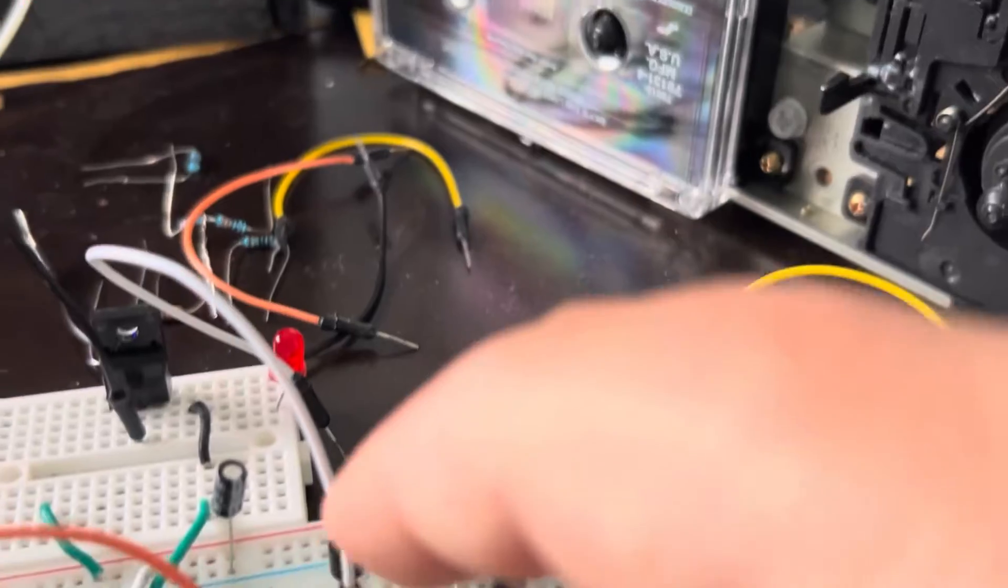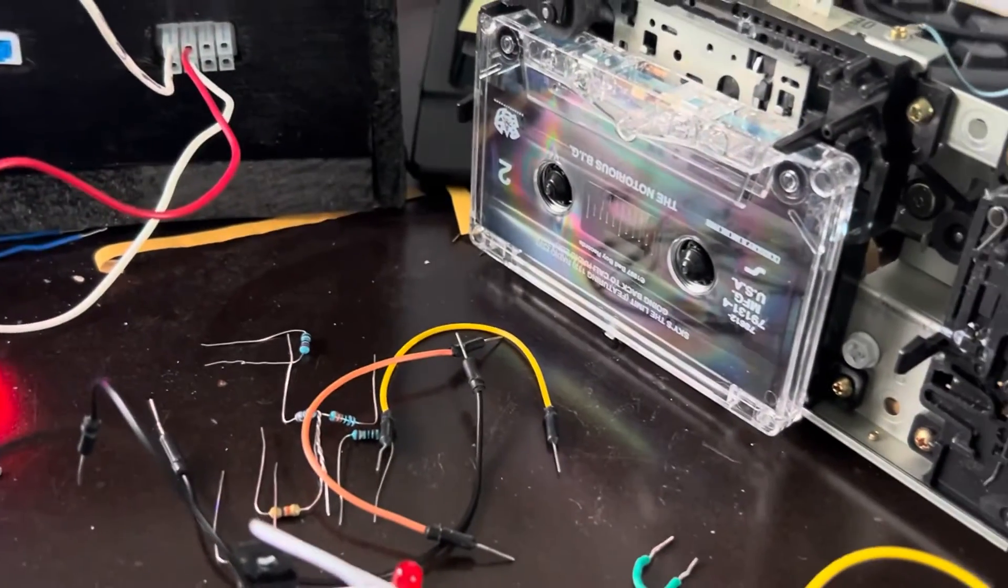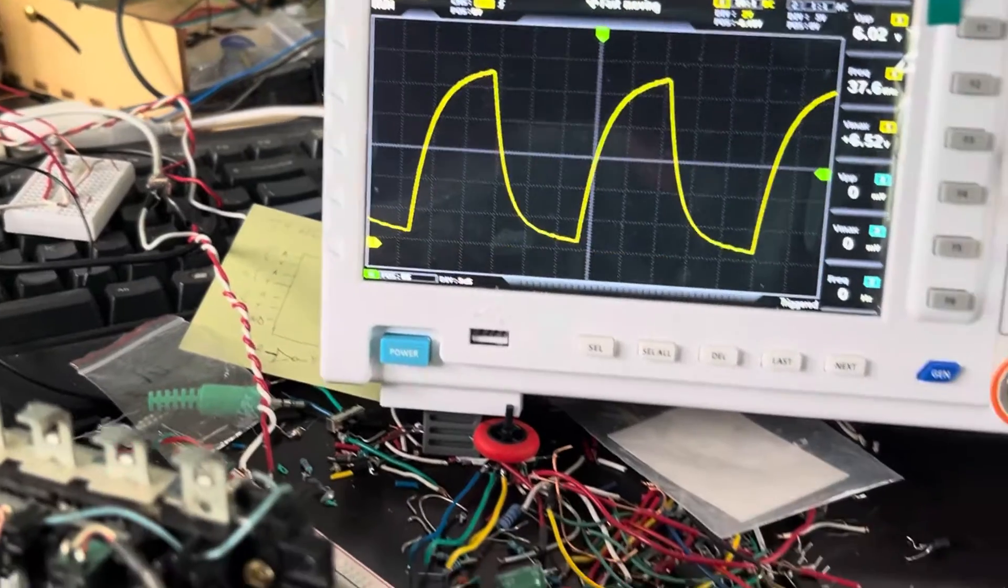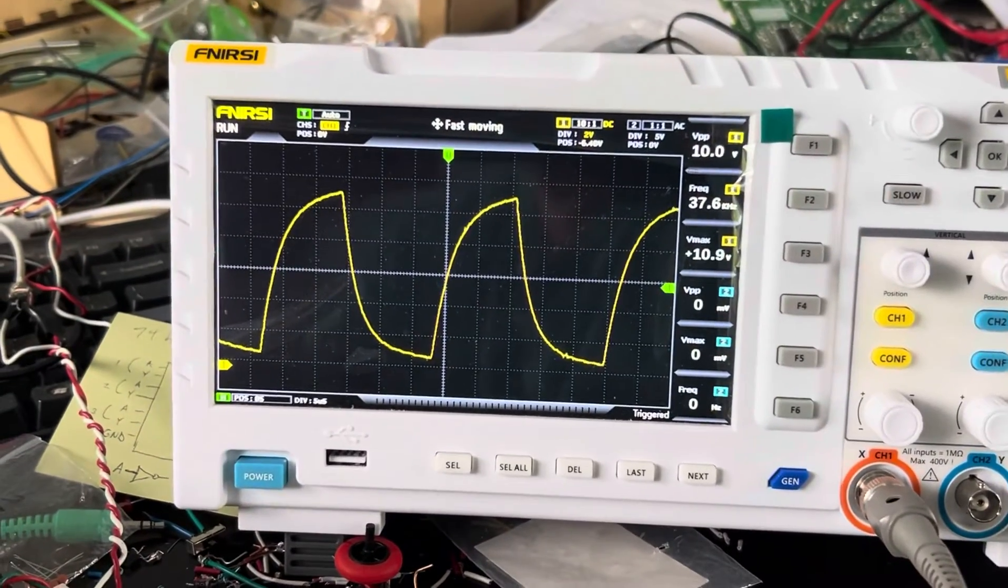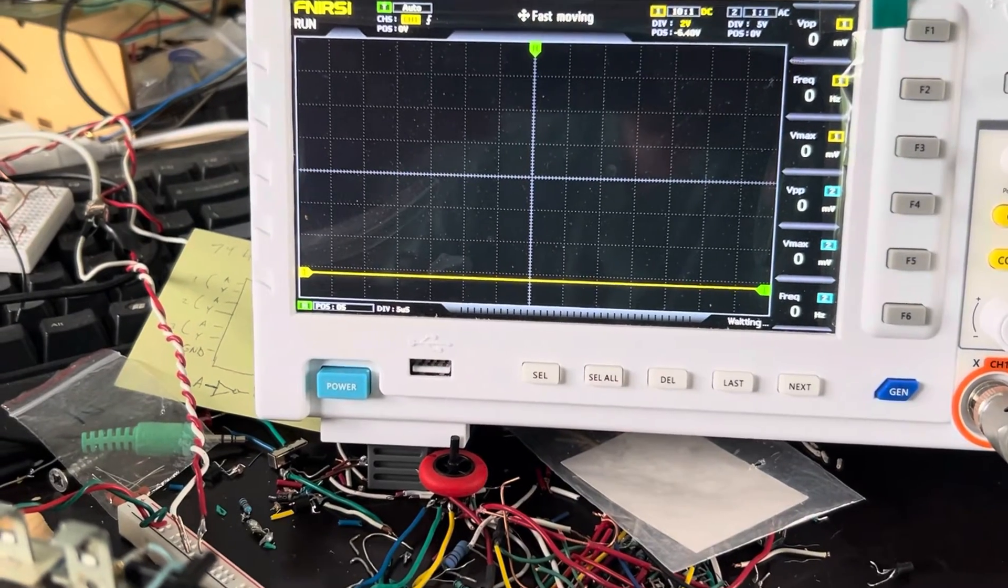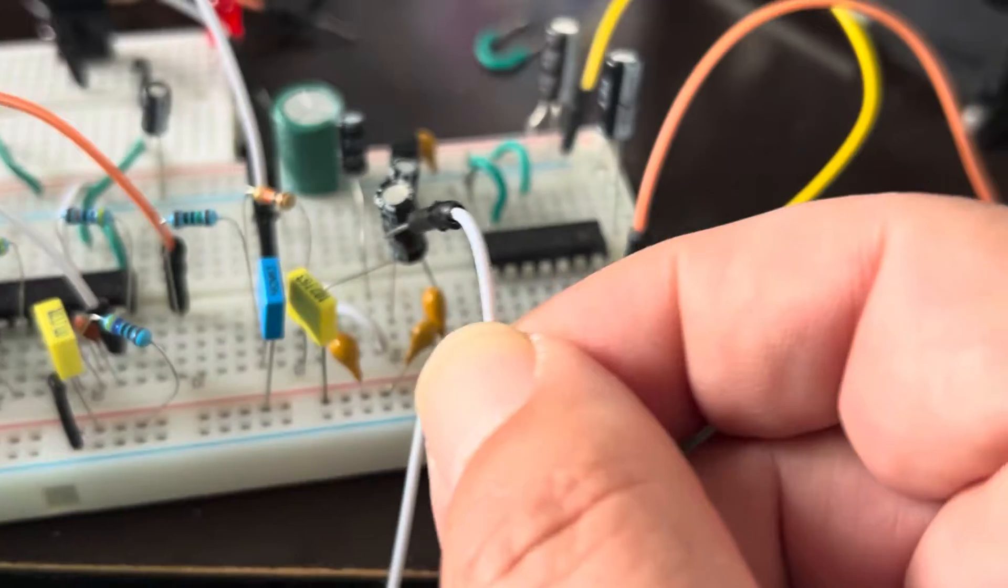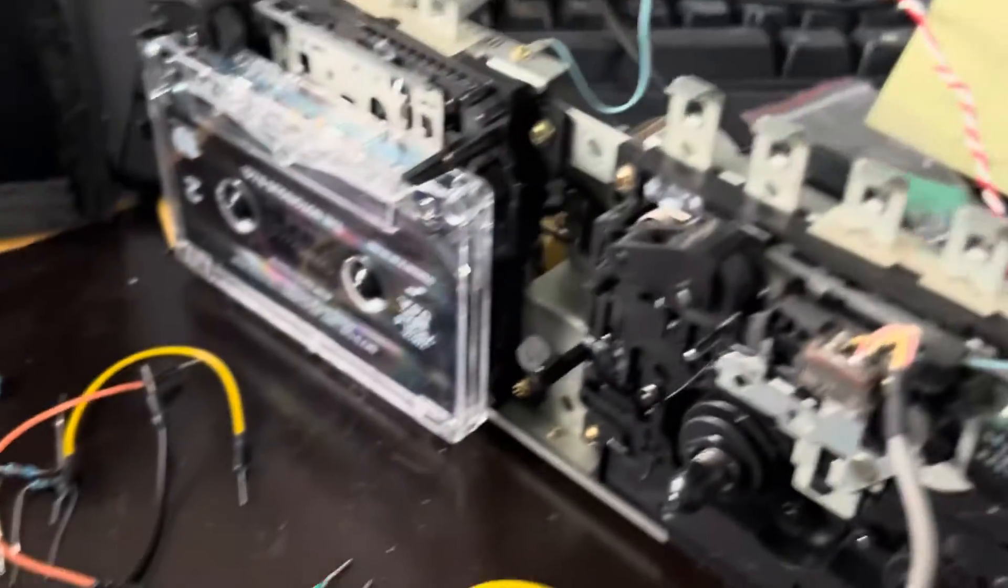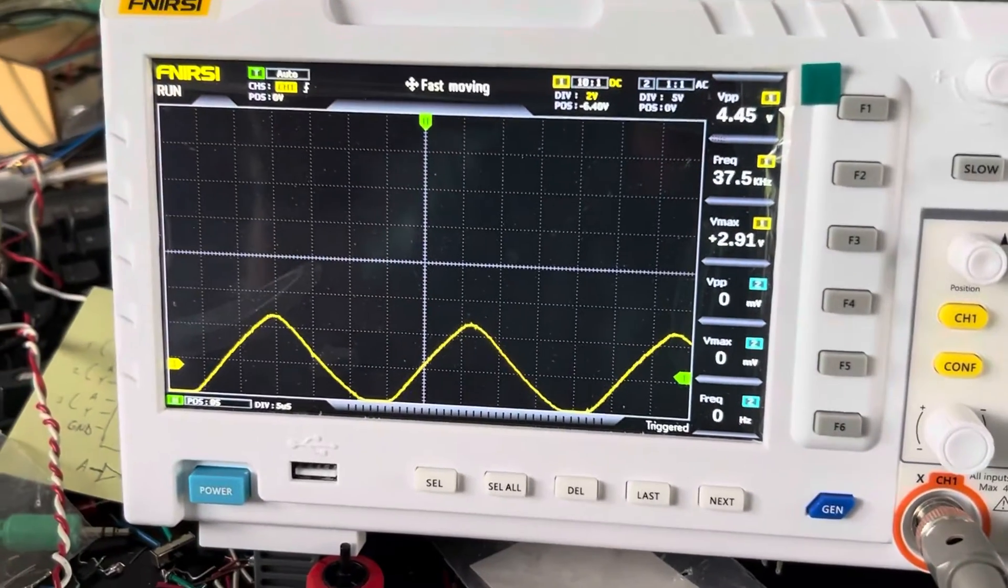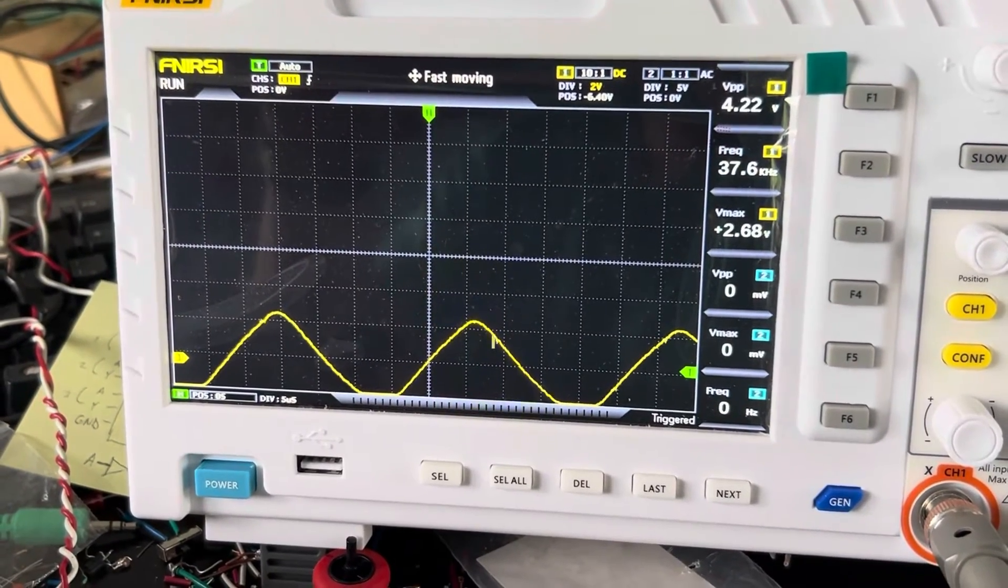You put it through a second low-pass filter, and so, when you probe it at various points, here's what it looks like after the first low-pass filter. After the second low-pass filter, and going through this capacitor to center it, this is the signal. So, unfortunately, that signal is not high enough voltage.